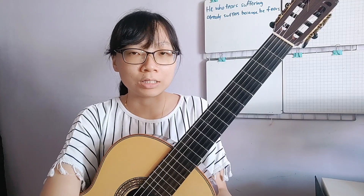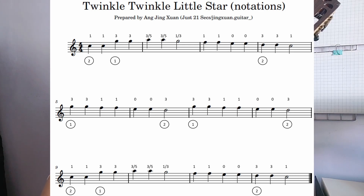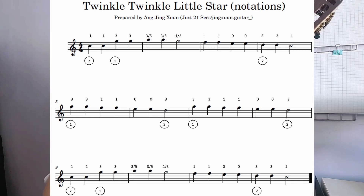I don't have the original score of Twinkle Twinkle Little Star, but instead I input the score onto MuseScore and added in the notation which my first guitar teacher taught me. I found this notation really helpful because it helps me memorize the notes on the staff and also the notes on the guitar. The number on the top represents the fingering, while the number on the bottom represents the string.